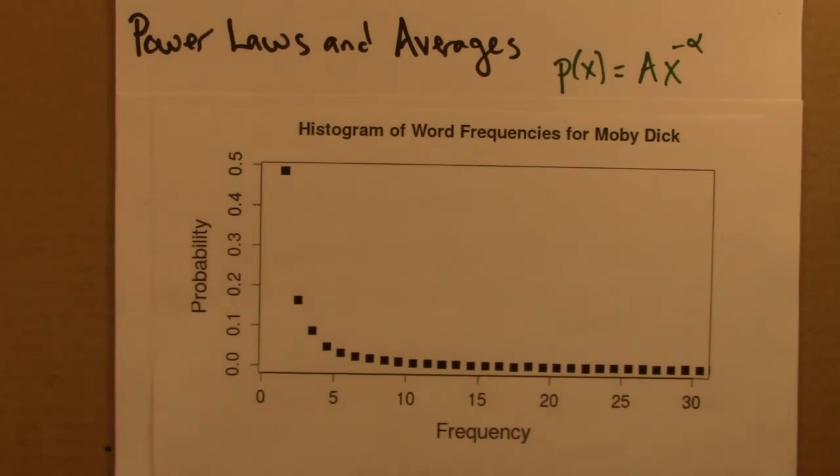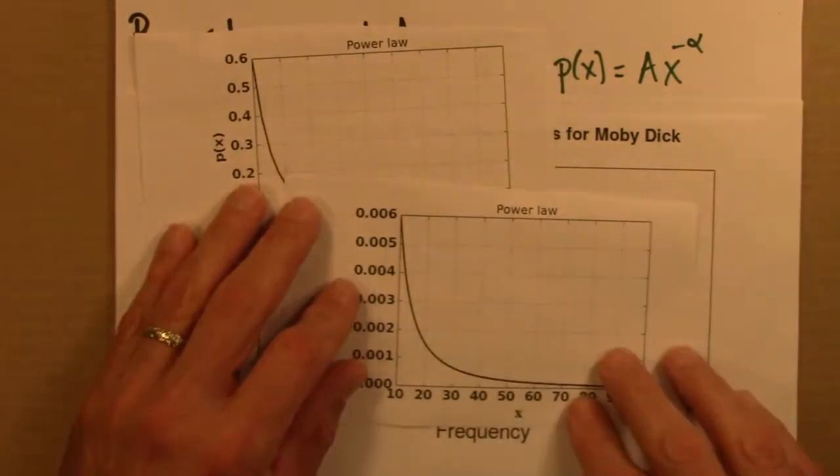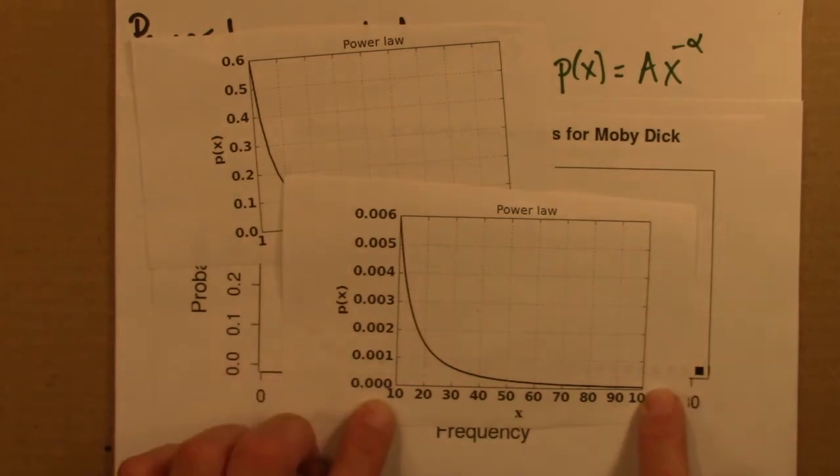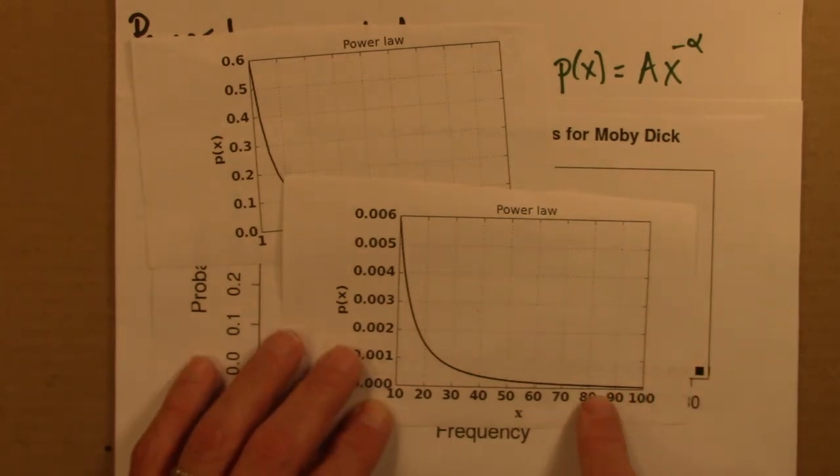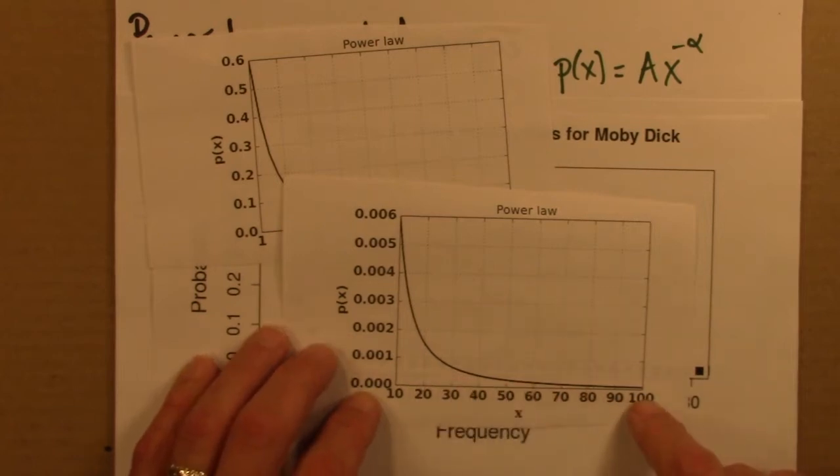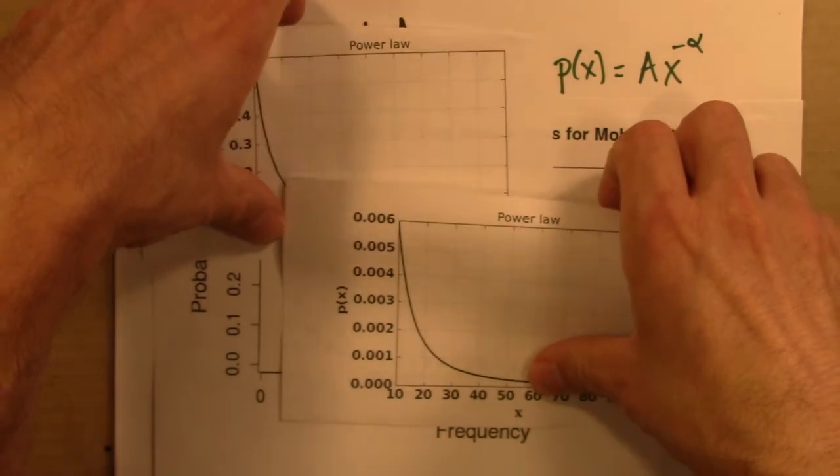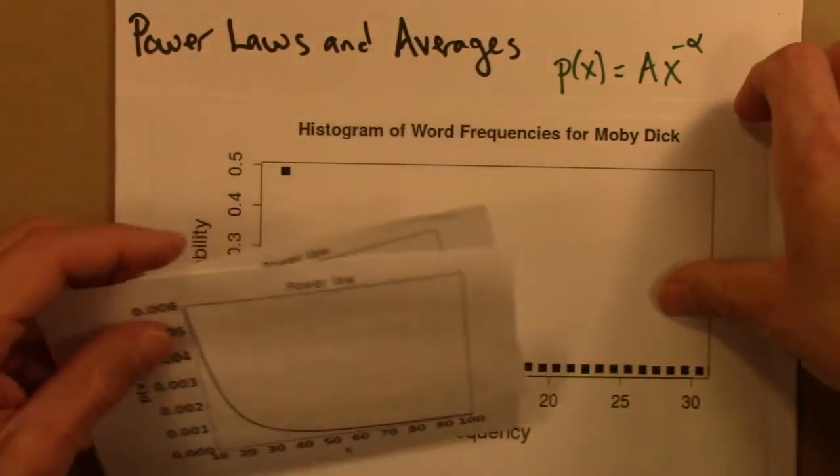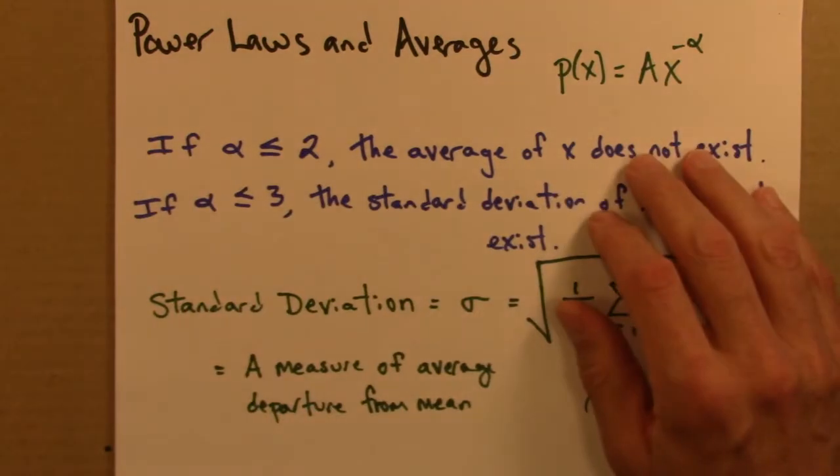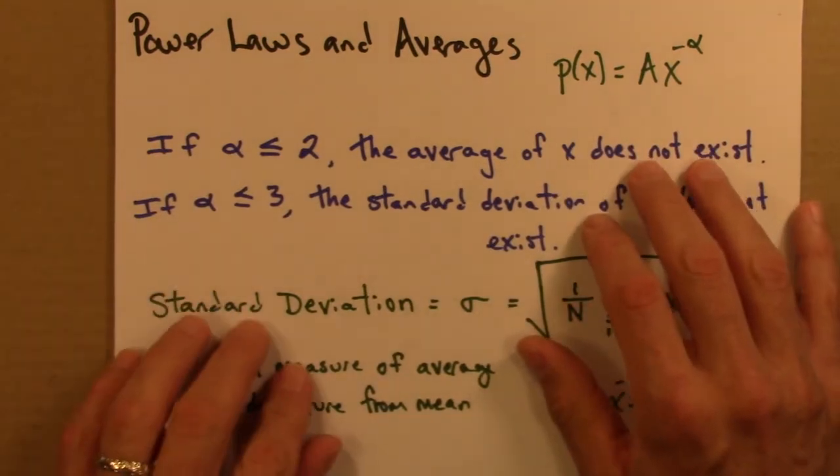Here are some other views of similar power laws. Here this is going out to 100. And so these large values are rare, but not unthinkably rare. And so if we were to sample this a million times, we would see some very, very large numbers, and lots and lots of very small ones. So just like with the St. Petersburg game, that can mean that sometimes averages don't exist.